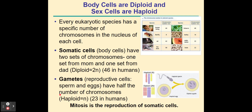The difference between body cells and sex cells: body cells are diploid, meaning they have two sets of chromosomes in every cell, and sex cells are haploid — they have half the number of chromosomes. Every eukaryotic organism has a specific number of chromosomes unique to that species. Somatic cells are all the cells of your body except eggs if you're female and sperm if you're male. All somatic or body cells have two sets of chromosomes, one from mom and one from dad.